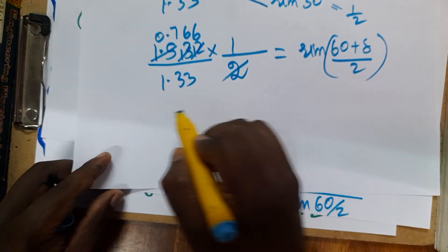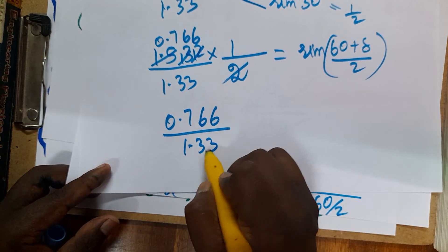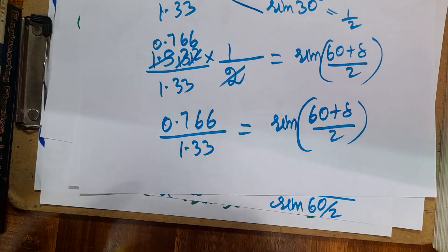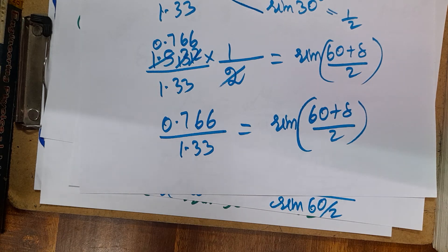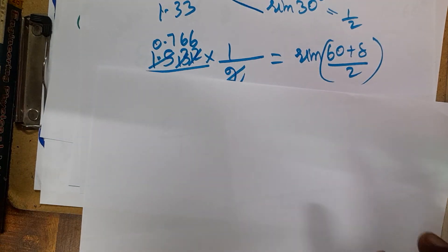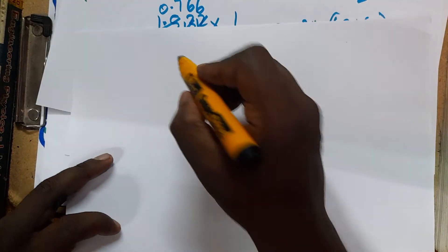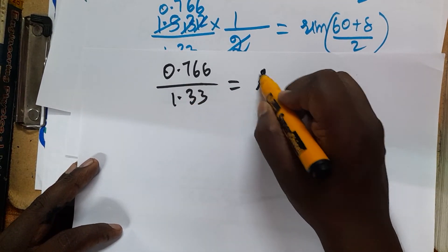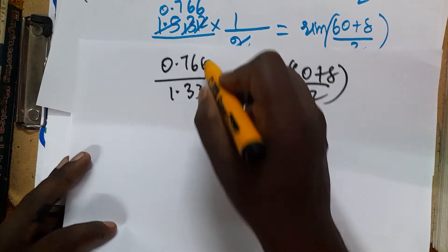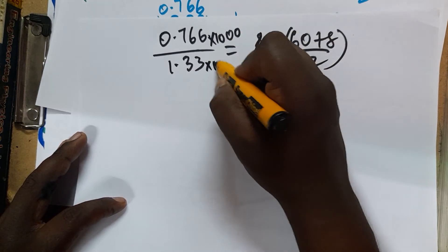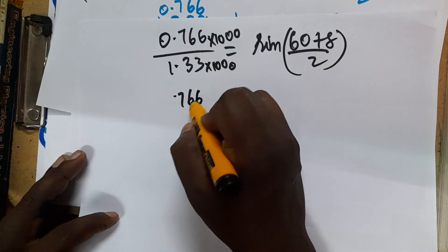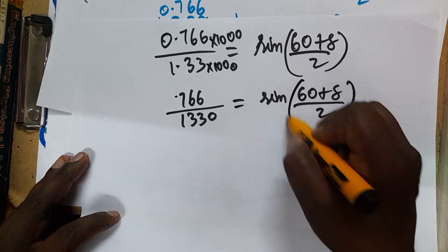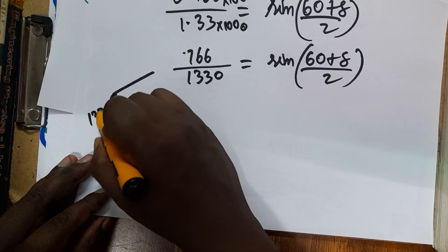So we have: 0.766 divided by 1.33 = sin((60 + δ)/2). To perform this division, multiply numerator and denominator by 1000: 766 divided by 1330 = sin((60 + δ)/2). Now I am going to carry out this long division to find the decimal value.